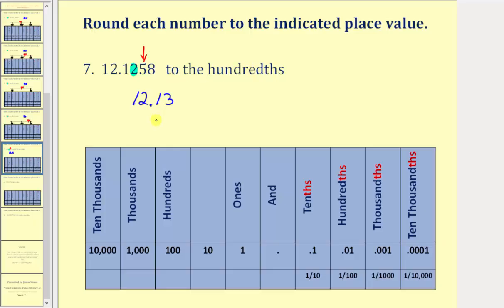Keep in mind from our previous examples, this tells us that if we had a number line, the given value is between 12.12 and 12.13. Because this rounded to 12.13, the given value is closer to 12.13 than it is to 12.12.